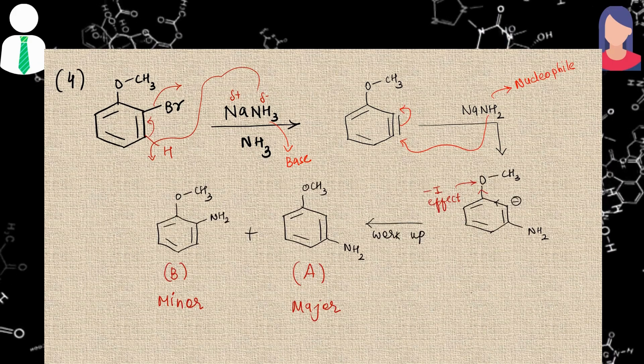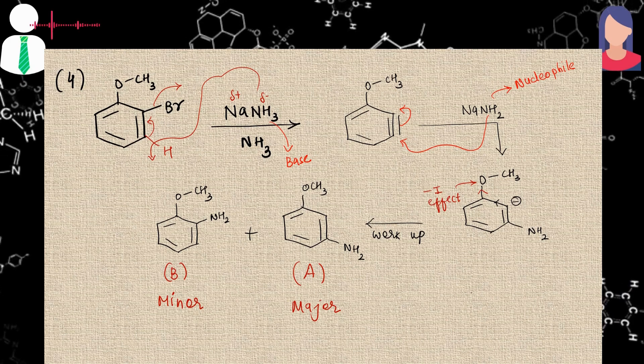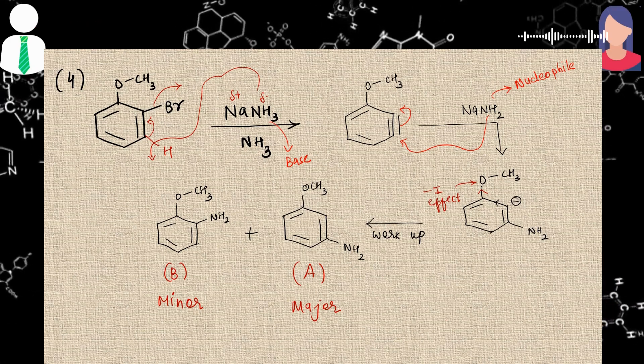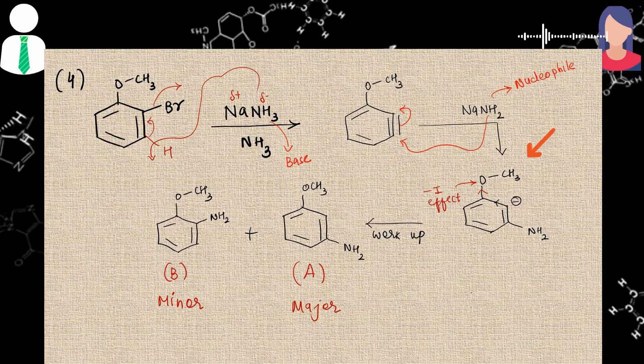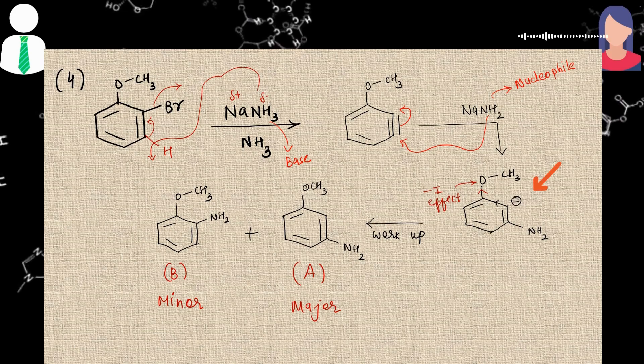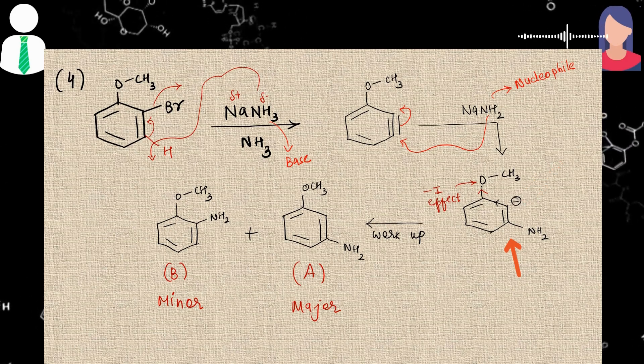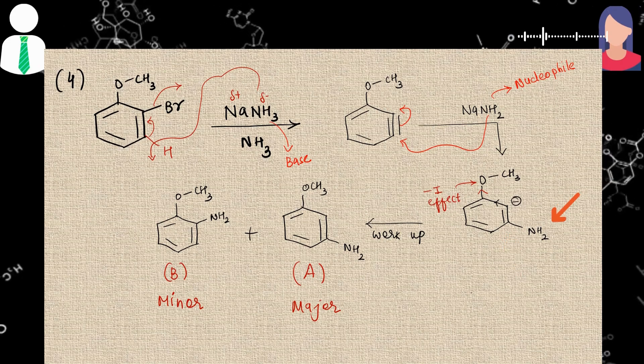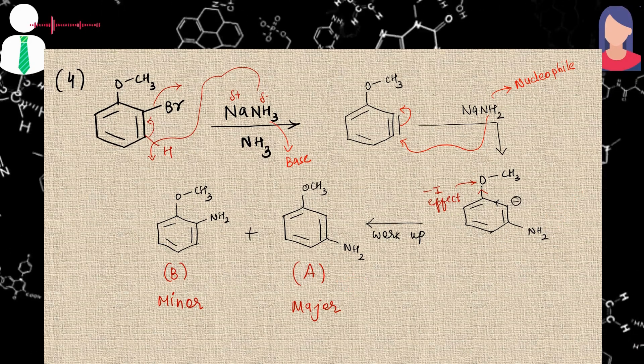In which product A is major and B is minor. Then he asked how can you say that product A is major. I answered that in the benzyne mechanism we generally don't consider mesomeric effect. Only inductive effect is considered. So OCH3 group only shows minus I effect. And because of that effect, negative charge is stabilized at orthocarbon of the OCH3 group and positive charge at metacarbon of the OCH3 group. So NH2 group attacks at metacarbon, and that's why product A is the major product. Then he said that is correct.